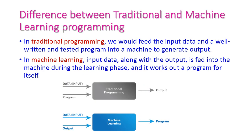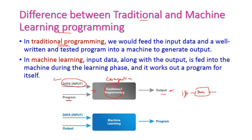Let us see how machine learning programming is different from traditional programming. In traditional programming, we give input and a program to our machine, it does all computations, and we get the output. So we feed input, it is processed, and from the machine we get output. That is traditional programming.